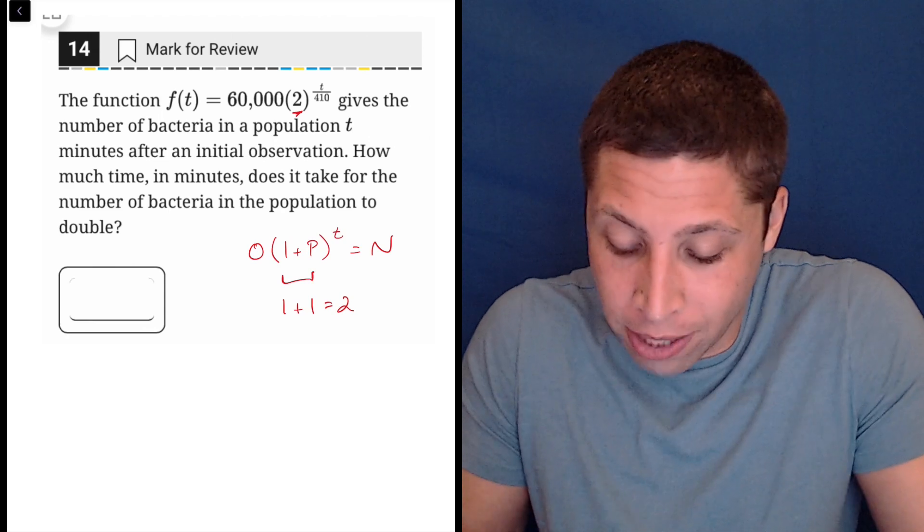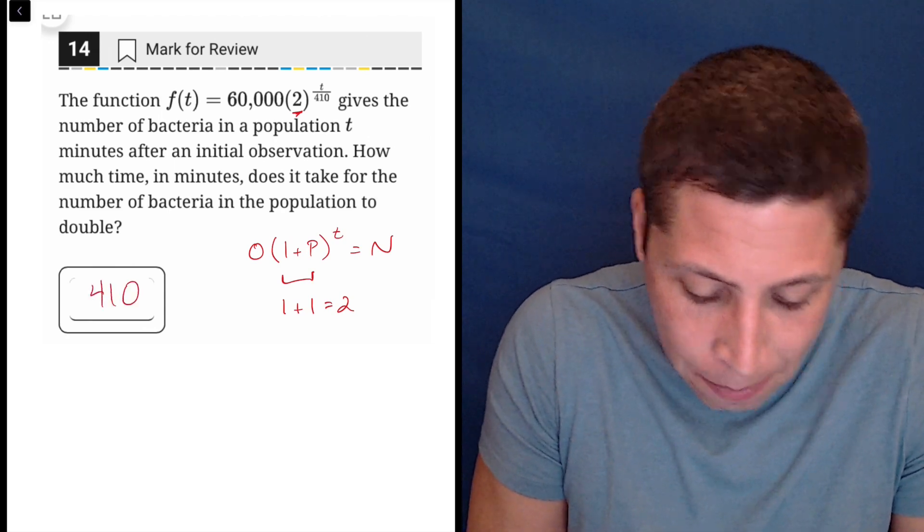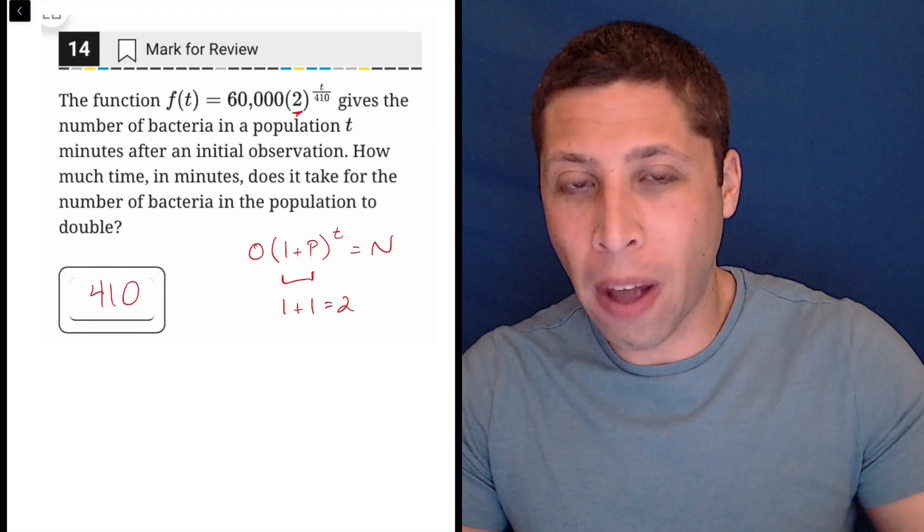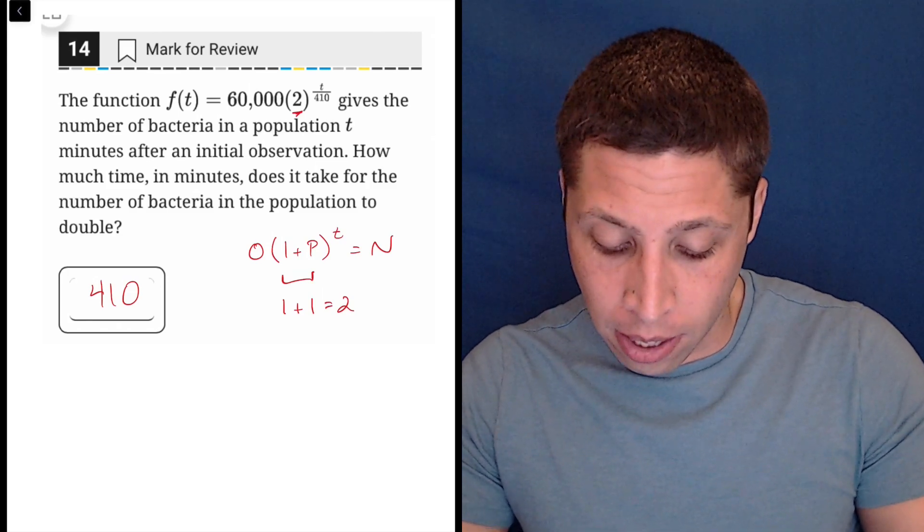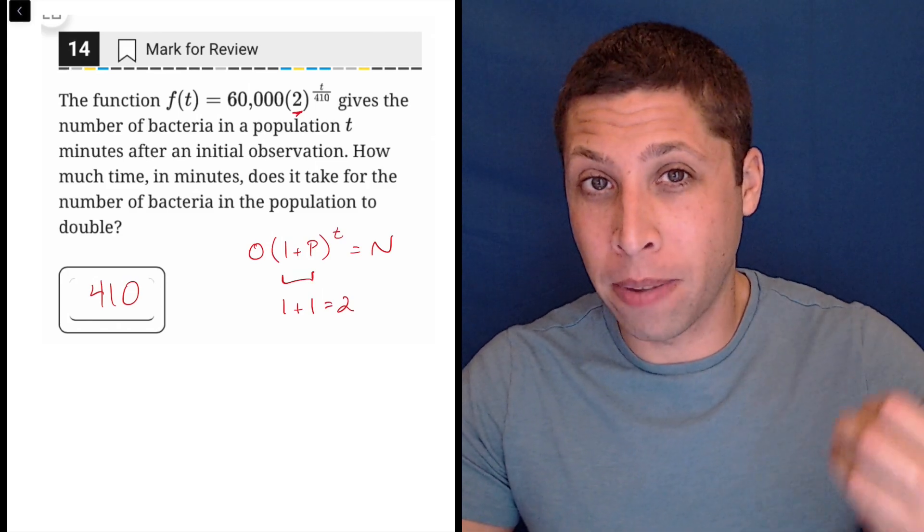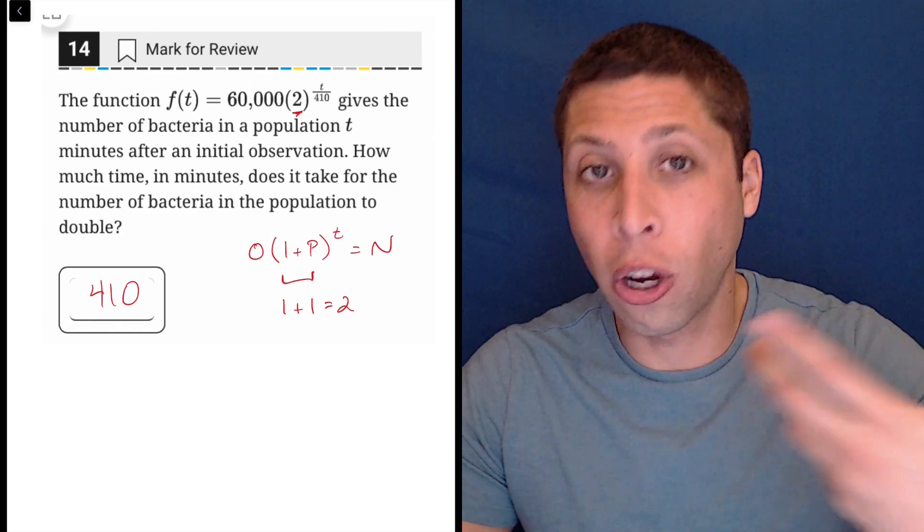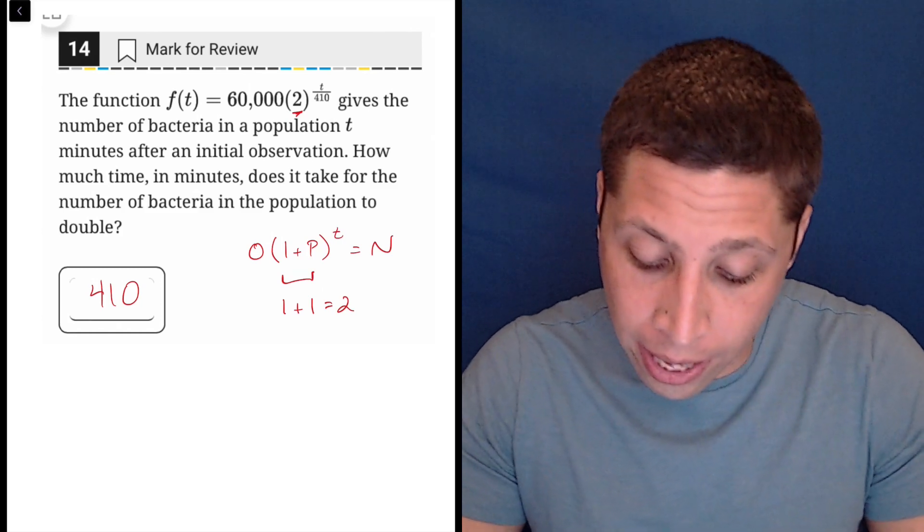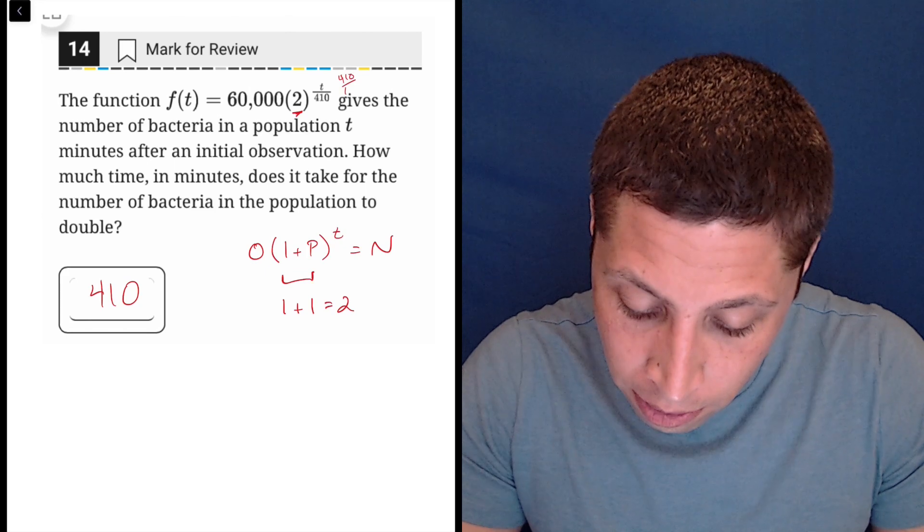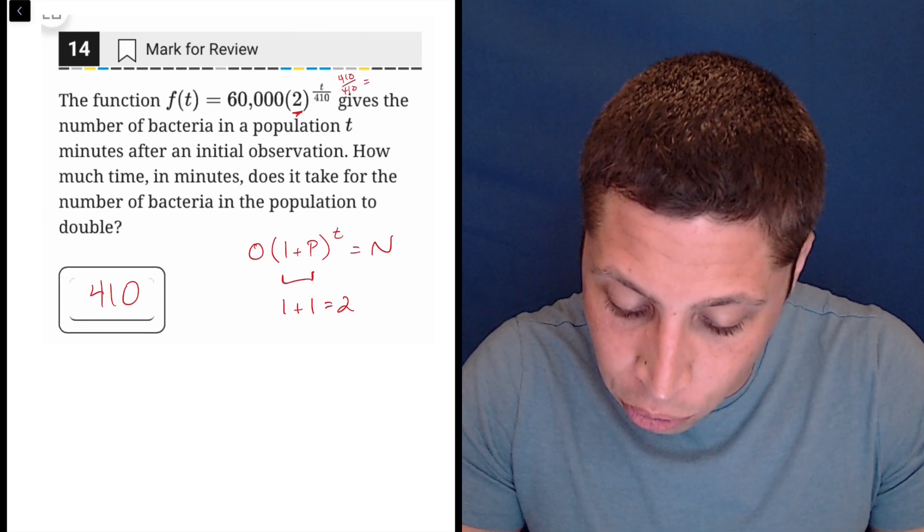Now, I know the answer is just going to be 410, because I'm able to then be like, okay, well what number, if I plugged it in for T, for the time, is going to cause this thing to show a doubling. And if I had 410 over 410 up here, 410 over 410 is just 1.